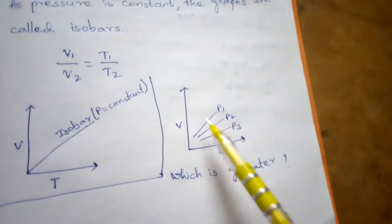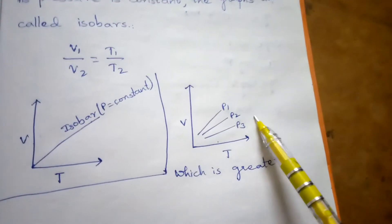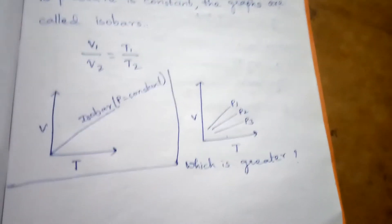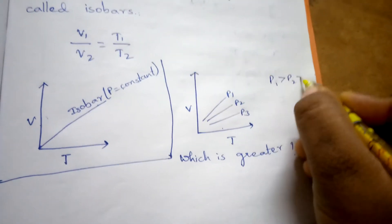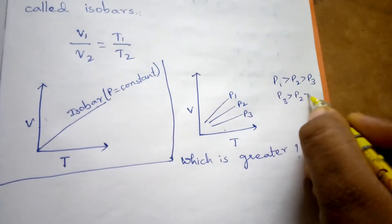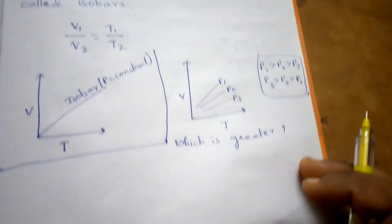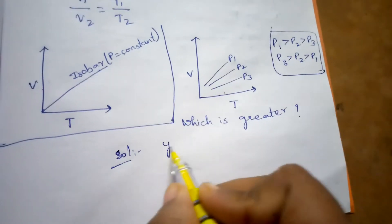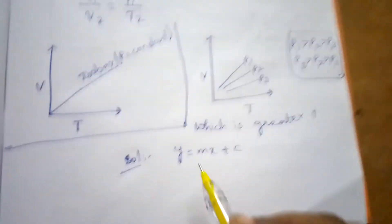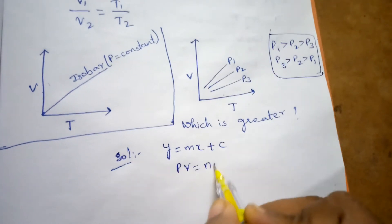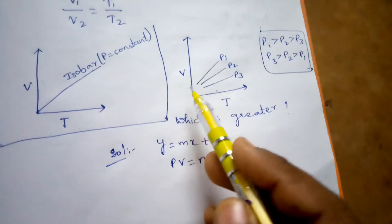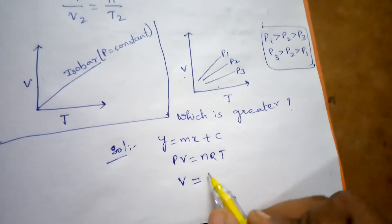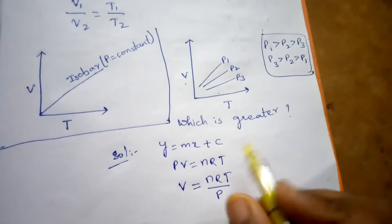Now consider a question: if we plot graphs between volume and temperature for three pressures P1, P2, and P3, which ordering is correct — P1 > P2 > P3 or P3 > P2 > P1? Using the ideal gas equation PV = nRT, rearranging for V: V = (nRT)/P. Since T is on the x-axis, this is in the form y = mx, where slope m = nR/P.